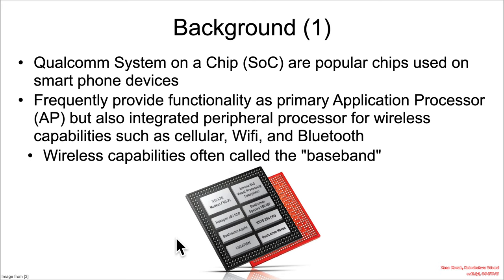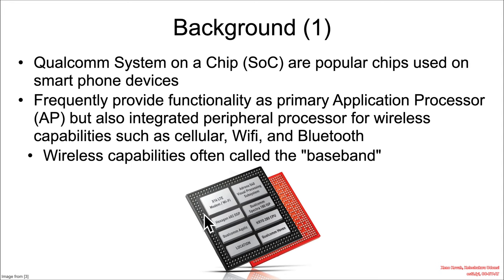And often, for modern SoCs, you're going to see things like the wireless capability all built into the same little component — what's called an IP component, or intellectual property unit. So things like cellular, Wi-Fi, and Bluetooth can all be on the same SoC.